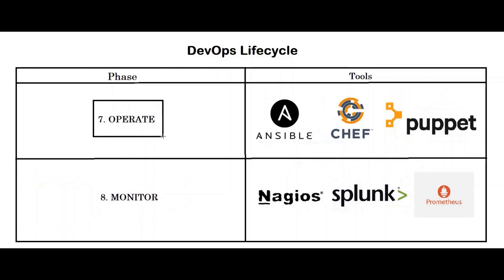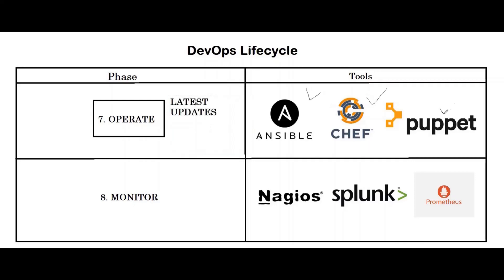Then comes the seventh phase of the DevOps lifecycle: operate. This phase is to keep the system upgraded with the latest updates, using tools like Ansible, Chef, and Puppet. Once your application is deployed, you can monitor it using monitoring tools like Nagios, Splunk, and Prometheus.